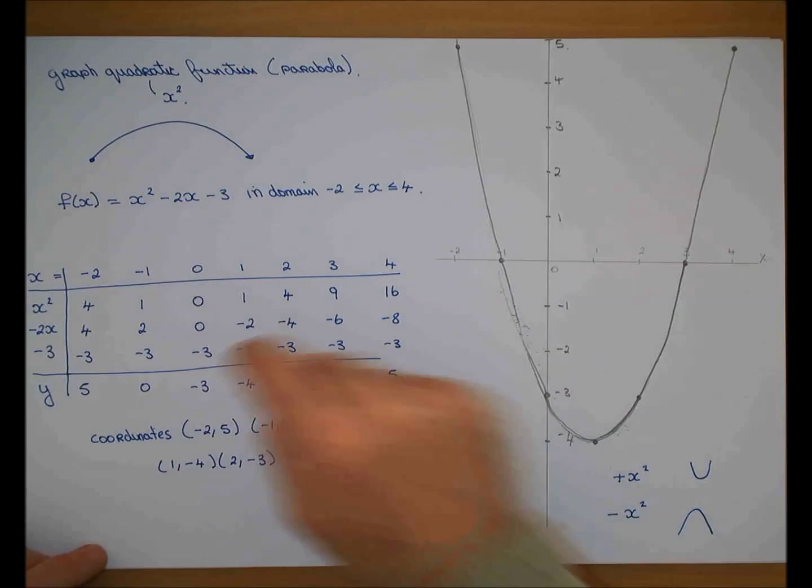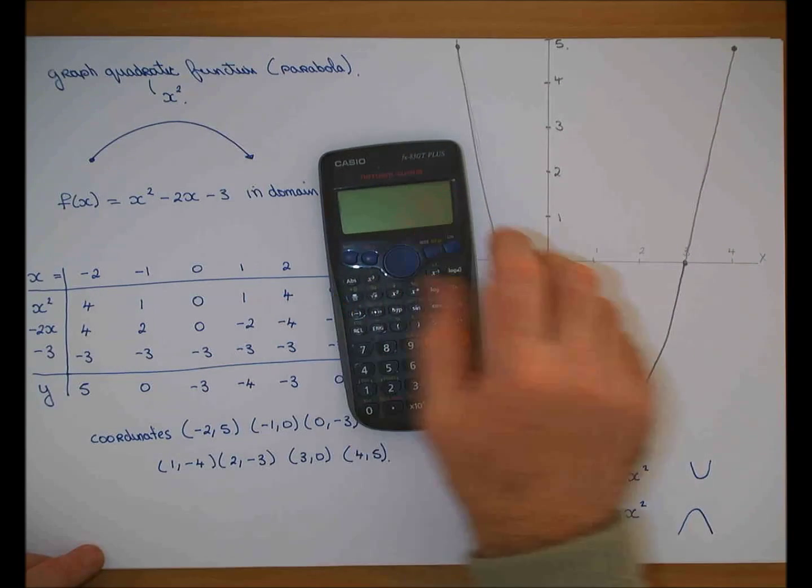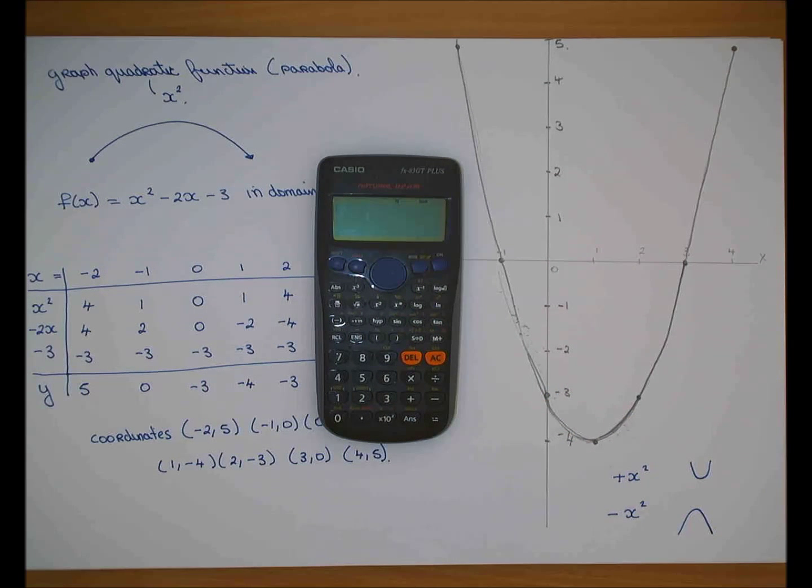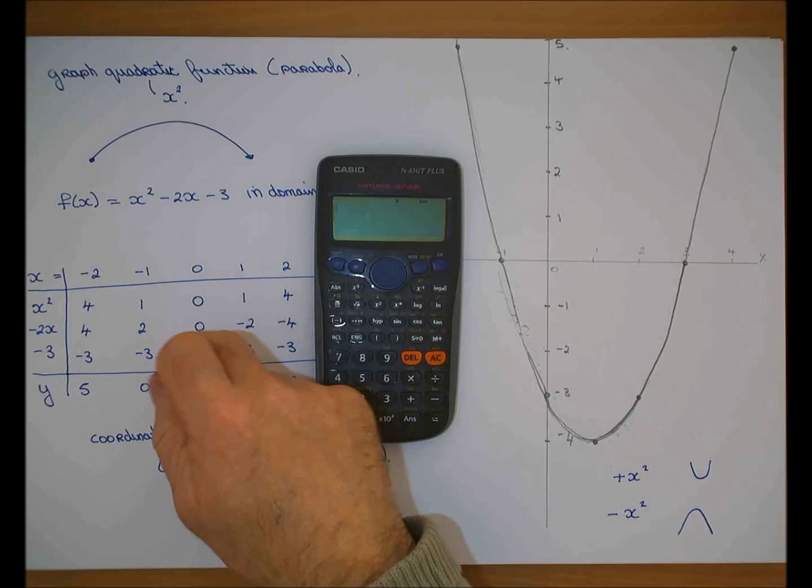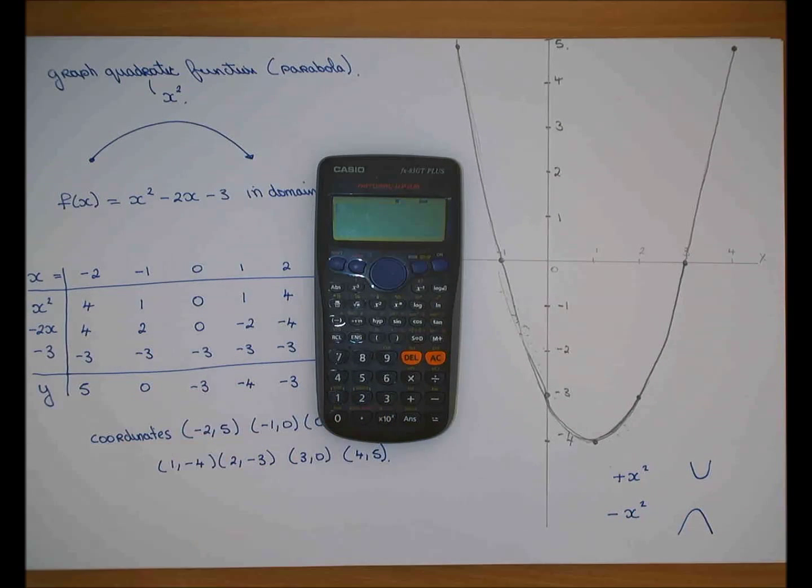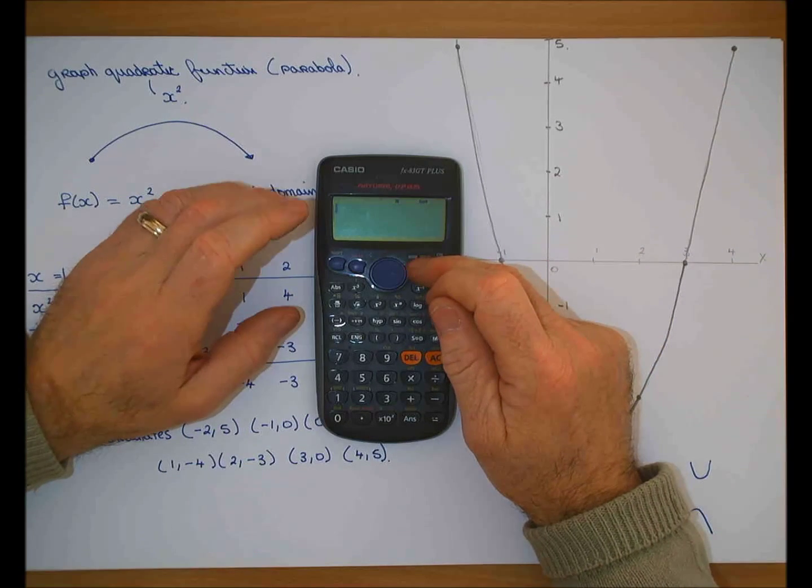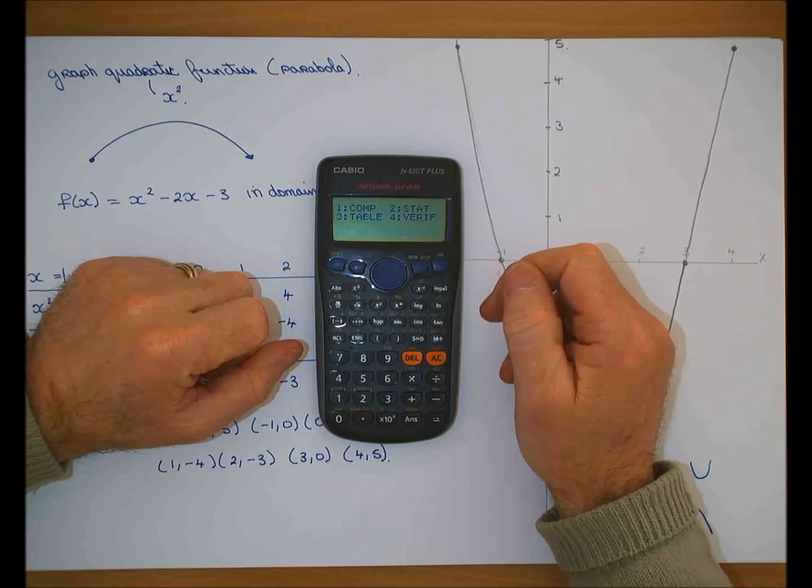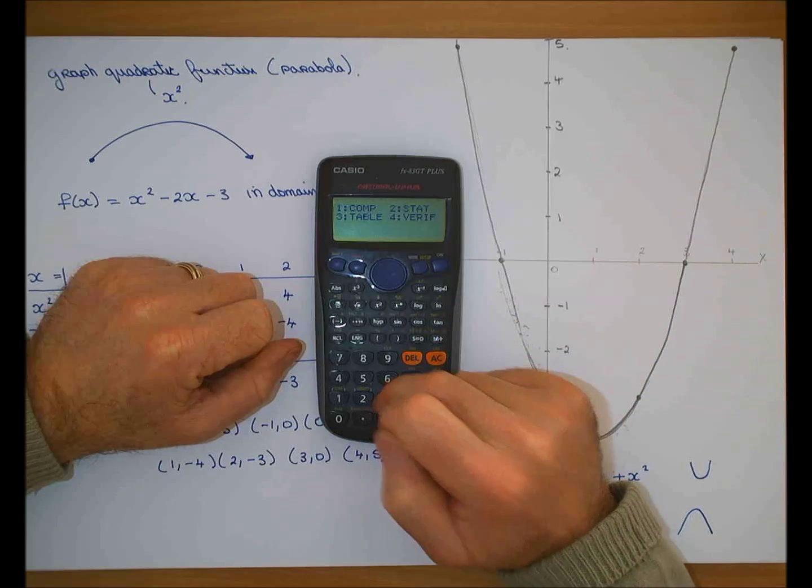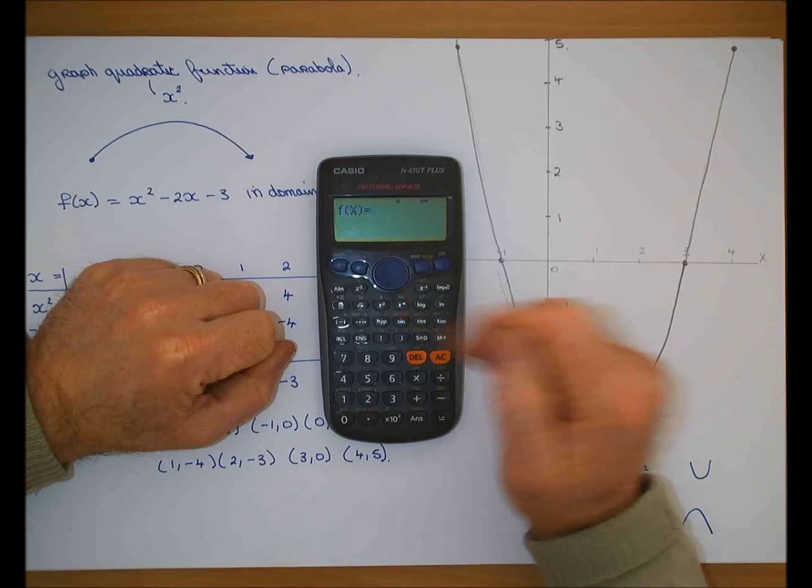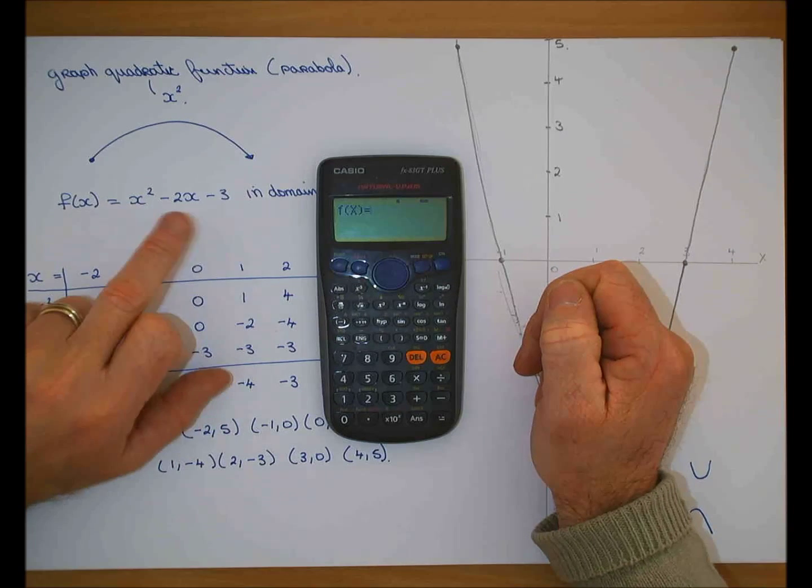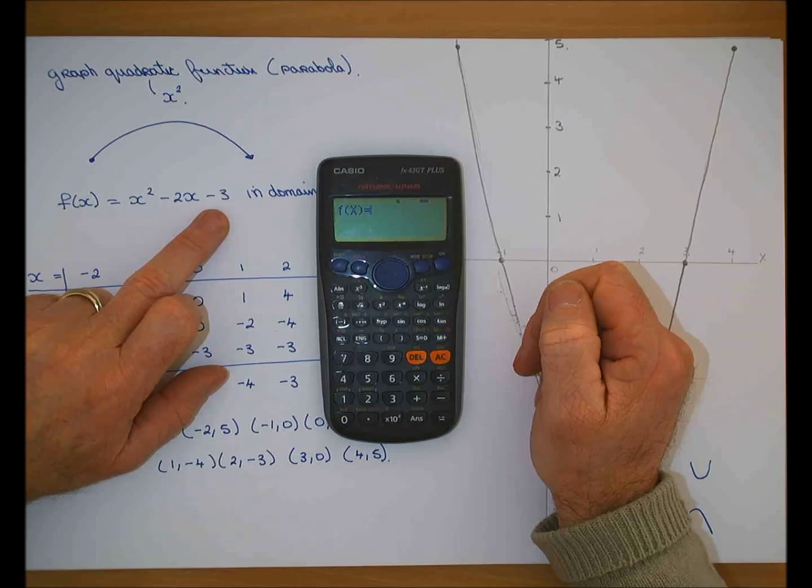Now see this table. Your calculator will give you the table. You're expected to show your work, but you can check if your answer goes right. So if you go into mode, just watch, you get choices. You get 1, 2, but 3 says table. So you hit 3. And it says f(x) equal to. And your graph is f(x) equal to or y is equal to. Now what must I put in? x squared minus 2x minus 3.